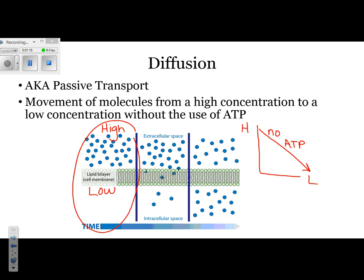Molecules want to move from a high concentration to a low concentration. As time goes on, the blue dots go from high to low concentration. Eventually, you have equal numbers on both inside and outside of the cell. This last picture represents dynamic equilibrium. It's called dynamic equilibrium because the particles are equal on both sides. Equal does not mean they've stopped moving. For every particle that goes into the cell, one particle goes out.